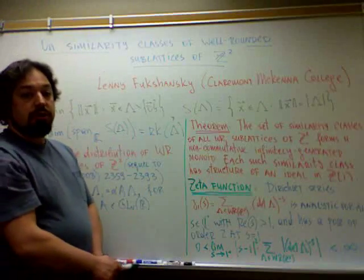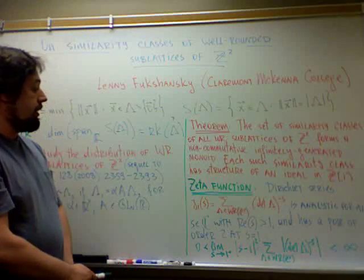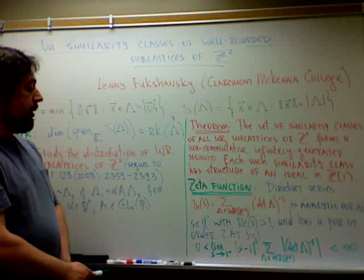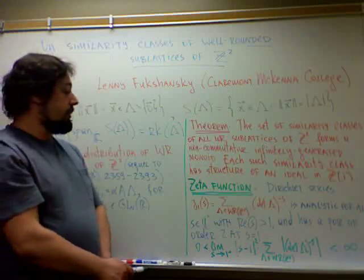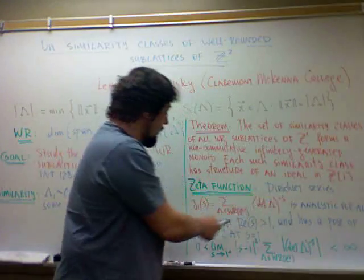Now we use this characterization of similarity classes to prove a certain result about the so-called zeta function of well-rounded sub-lattices of Z². Namely, let's define Dirichlet series, this zeta 1 of S,